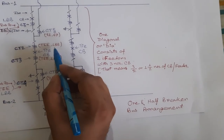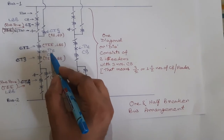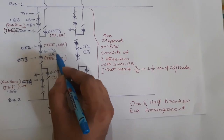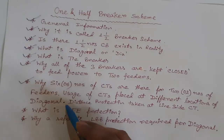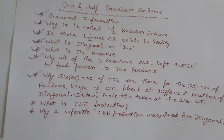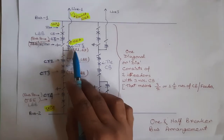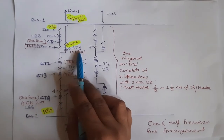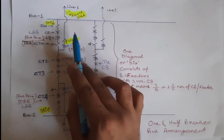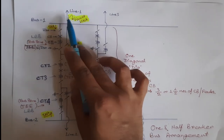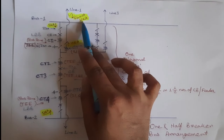This LBB is for the tie breaker. During failure of the tie circuit breaker, this tie LBB comes into picture. Now, why is distance protection taken from the line side CT? Distance protection is connected with the line side CT — CT5 in this case. To understand why, we will take a simple example. Suppose a fault occurs in line 1 and the magnitude of the fault current is 10 kilo amperes.